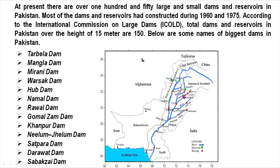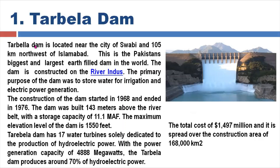The Tarbela Dam is located near the city of Swabi, 105 kilometers northwest of Islamabad. It is Pakistan's biggest and the largest earth-filled dam in the world. The dam is constructed on the River Indus. The prime purpose of the dam was to store water for irrigation and electric power generation.